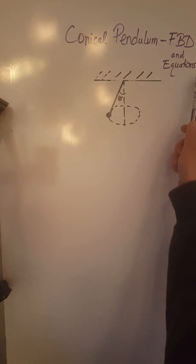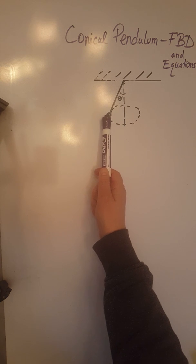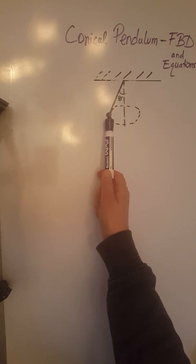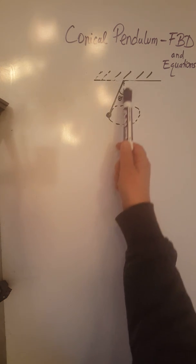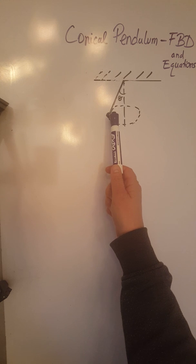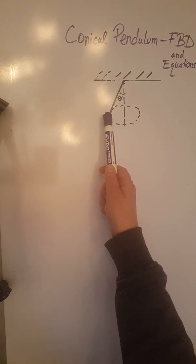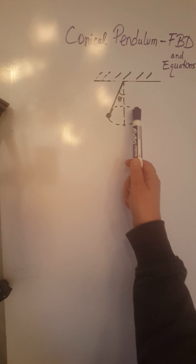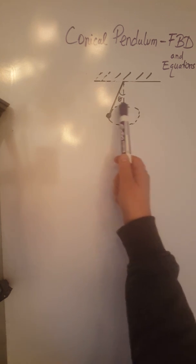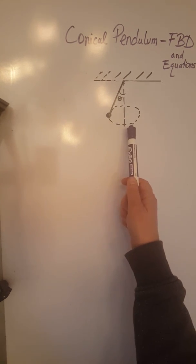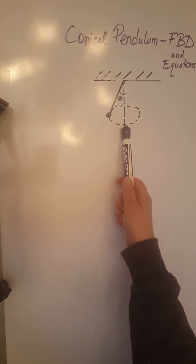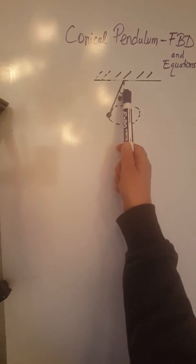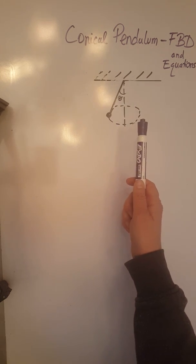For a conical pendulum, we have this bob over here, an object of mass m attached to a string that is a very light string. This bob is moving in uniform circular motion in a horizontal plane like you see over here. In order for that to happen, the string that was initially in equilibrium had to be moved from equilibrium at a certain angle theta.